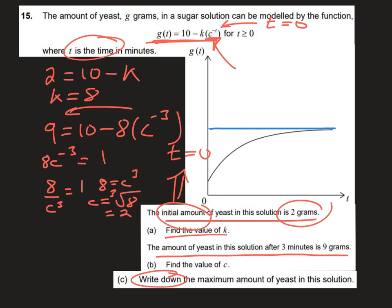You could plot y = 10 - 8(2^(-x)) on your calculator and then just look at the values of y and see that they tend towards 10.